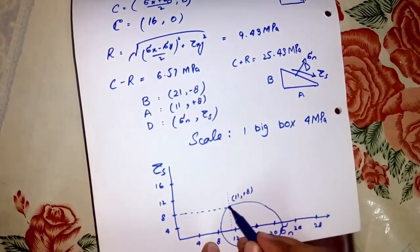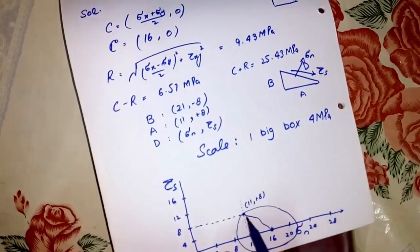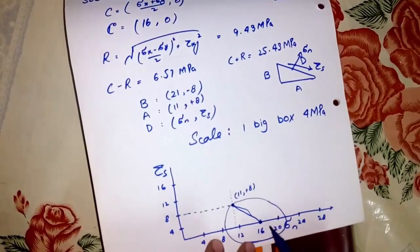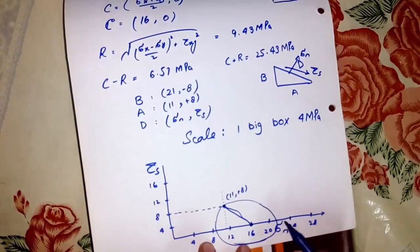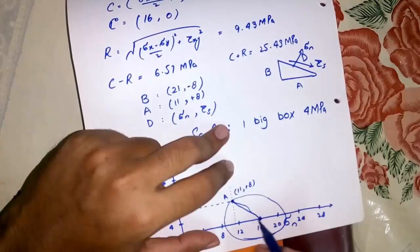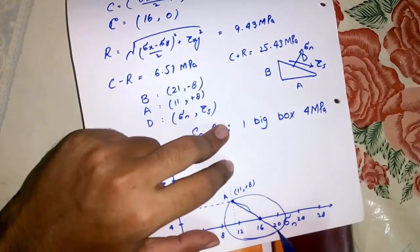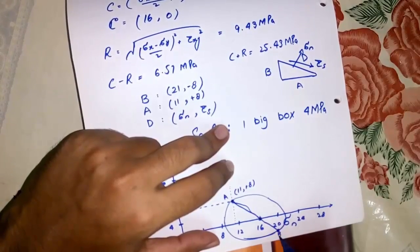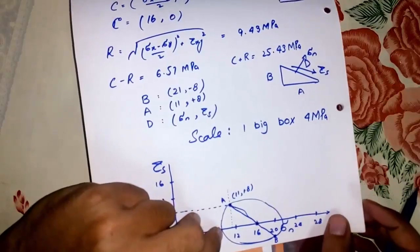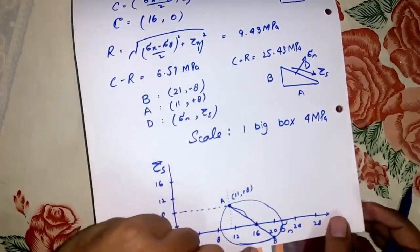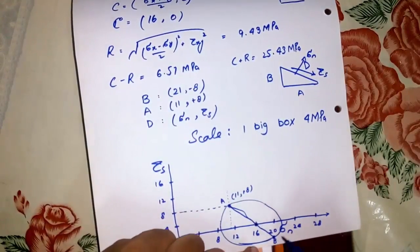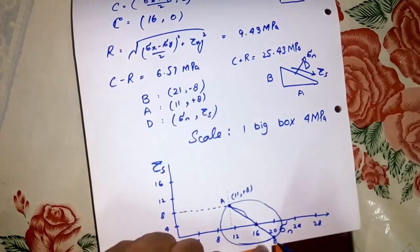After drawing the circle, point B would be in a straight line through the center. This would be point B. As you make it with proper scaling, the B point coordinates would be (21, minus 8).